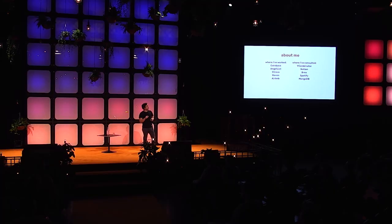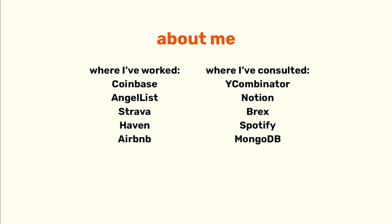I'll go really quickly over where I worked: Coinbase, AngelList, Strava, Haven, Airbnb. Haven was a tiny seven-person startup. When you think about growth, it's really nice to know exactly how large the companies you are working with are, because what worked at Haven is very different from Airbnb. Working in Web3 and crypto is very different from Strava. Once you start learning growth, you can generalize it and adapt it to fit the correct niche.